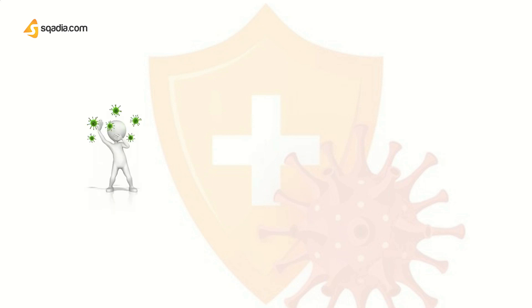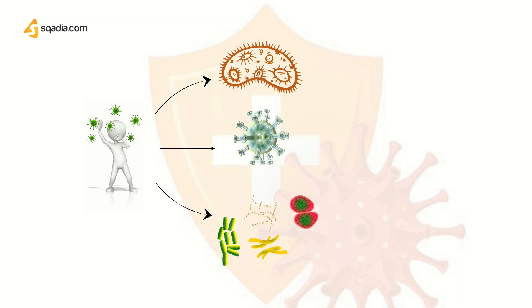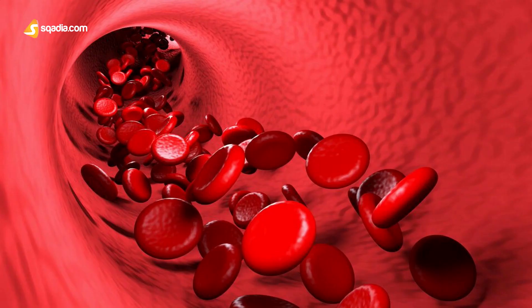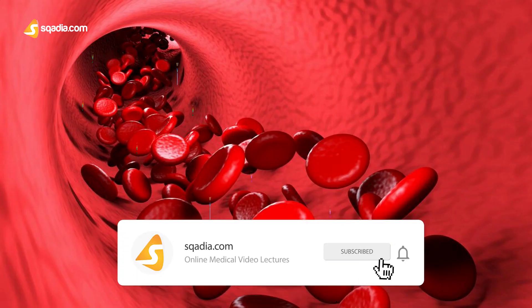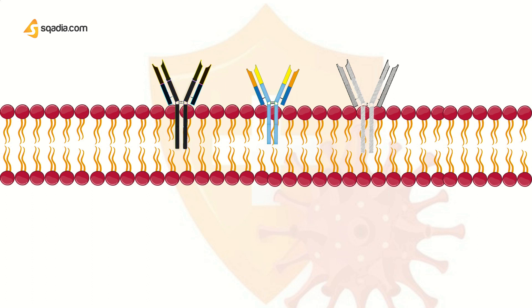Before any immune mechanism can go into action, there must be a recognition that something exists for it to act against. Normally, this means foreign materials such as virus, bacteria, or other infectious organisms. This recognition is carried out by a series of recognition molecules or receptors. Some of these circulate freely in blood or body fluids. Others are fixed to the membranes of various cells or reside inside the cell cytoplasm.